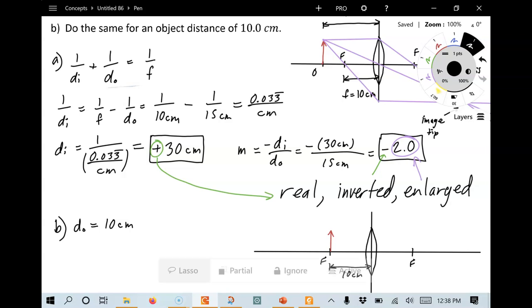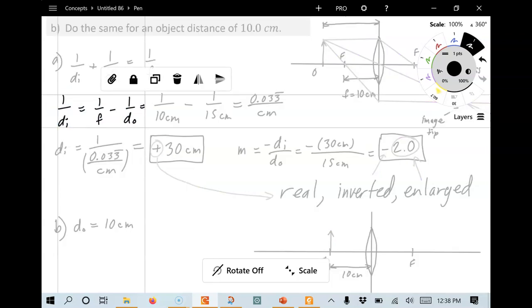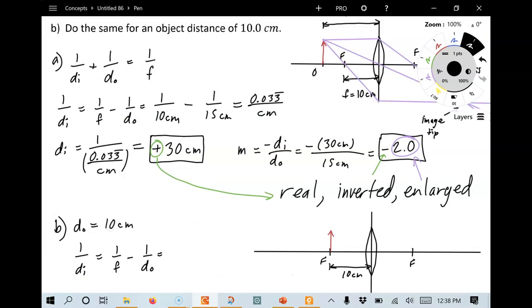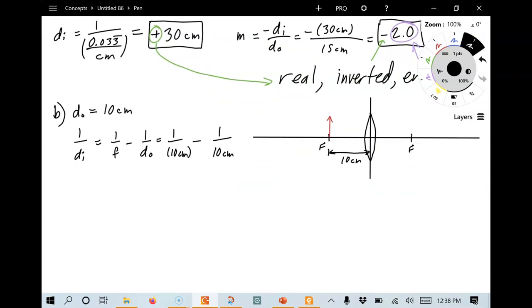So let's go ahead. We know we're going to calculate the image distance. So we can kind of just use this formula that we've already gotten from before. And let's put in our values. So 1 over F, F is 10 centimeters, minus 1 over DO. That's also 10 centimeters. What's that going to come out to?